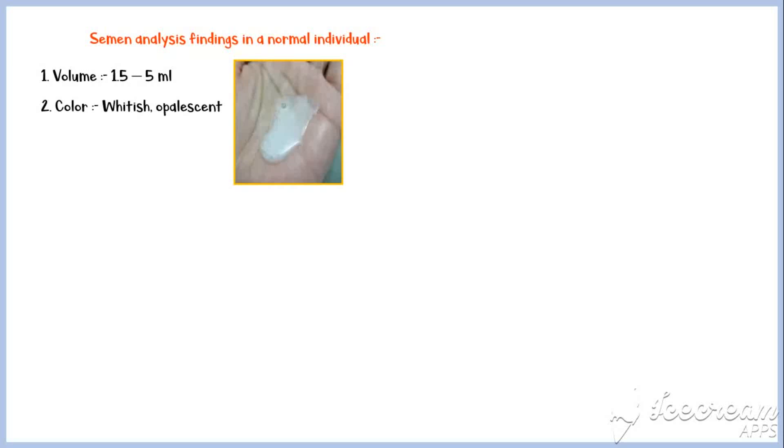Now let's see what are the normal semen analysis findings in a normal individual. The normal volume of semen per ejaculate is 1.5 to 5 milliliters, and the normal color is whitish opalescent, as you can see in this picture. Liquefaction completes within 30 minutes.